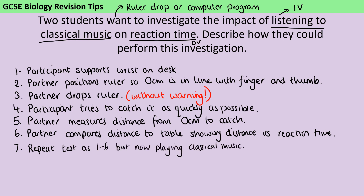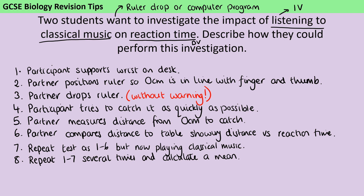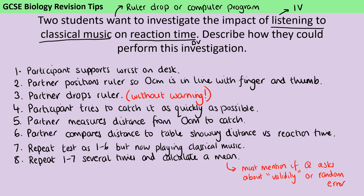Then you're going to repeat steps one to six but this time listening to classical music. After that, repeat the entire investigation to allow you to look for repeatability and to calculate a mean. Whenever you talk about repeating within one group that are all exactly the same, you should always add 'and calculate a mean,' because repeat on its own often isn't enough for the mark. This is particularly vital if the question mentions validity or reducing random error.